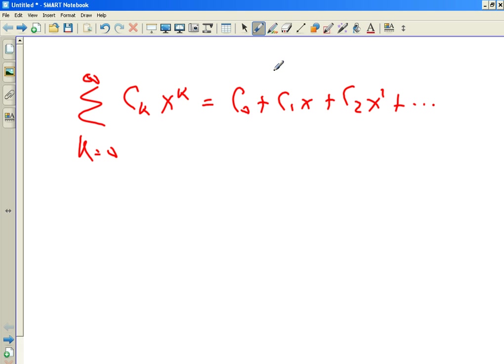McLaurin is in powers of X and it's good for X equal to zero or near zero, say some radius of convergence around zero, or everywhere. That's McLaurin. That's what we've been doing up to now.